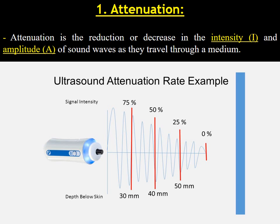I would like to remind you that in waves, intensity is defined as the power per unit area carried by a wave, while amplitude is defined as the maximum displacement of vibrating particles in a medium from the mean position when the sound is produced. The attached image depicts the rate of attenuation expressed in percentage, which occurs in an ultrasound wave as depth below the skin increases.